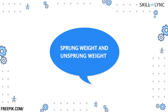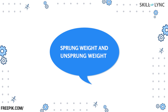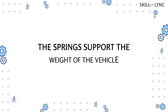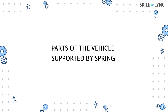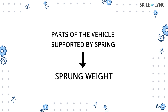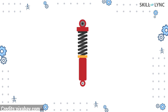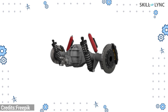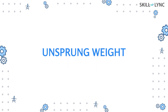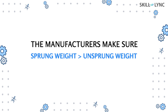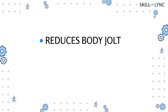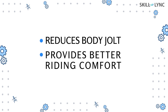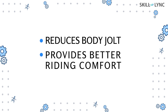For the final part, we'll be talking about sprung weight and unsprung weight. We know that the springs support the weight of the vehicle. The parts of the vehicle supported by the springs come under the sprung weight, and the other parts not supported by the springs — like the wheels, axle, etc. — come under unsprung weight. Manufacturers always make sure that the sprung weight is more than the unsprung weight, because it reduces body jolt — the sudden shock experienced by the body — providing better riding comfort for the passengers.